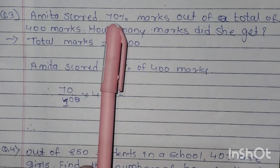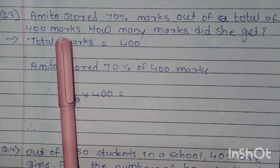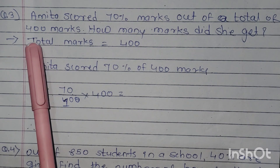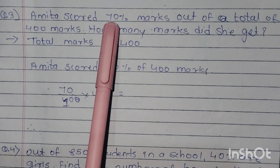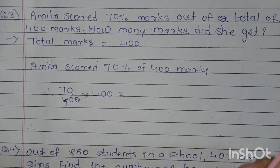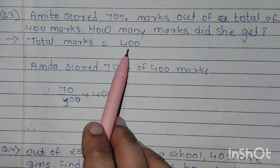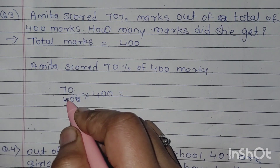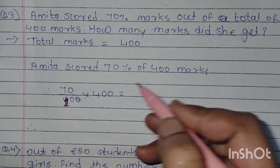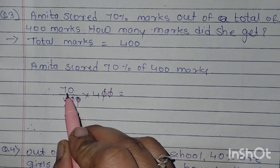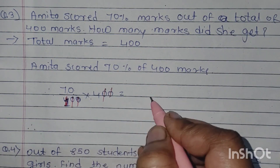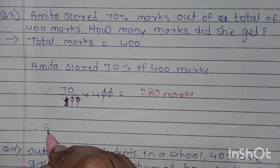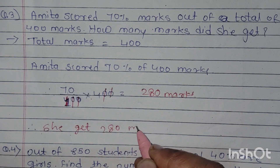Next, question number 3 word problem: Amita scored 70% marks out of a total of 400 marks — how many marks did she get? मतलब Amita को 70% marks मिले हैं, total marks 400, तो उसको कितने marks मिले। पहले आपको given लिखना है: total marks 400, Amita scored 70% of 400 marks, मतलब 70 upon 100 into 400. Zeros get cancelled and 7 into 4 is 28 — 280 marks. Therefore she gets 280 marks.